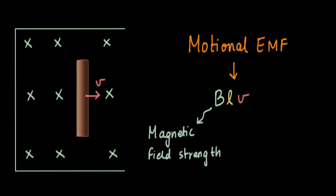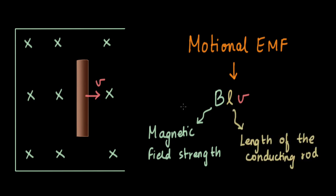L is the length of the conducting rod and V is the velocity with which the rod is moving. The goal of this video is to derive the magnitude of Motional EMF without using Faraday's law, and also to understand why there is an EMF induced in the first place.